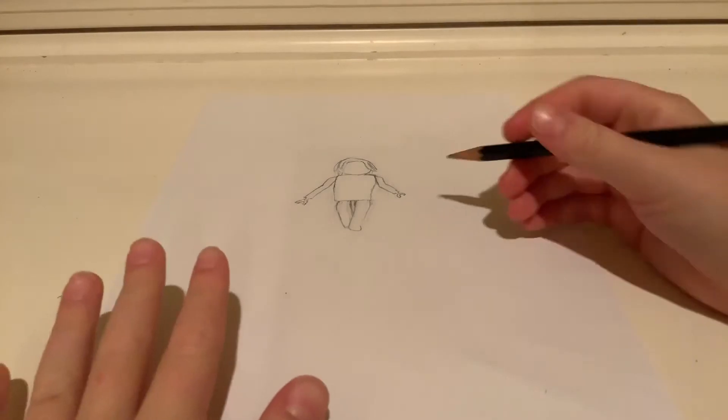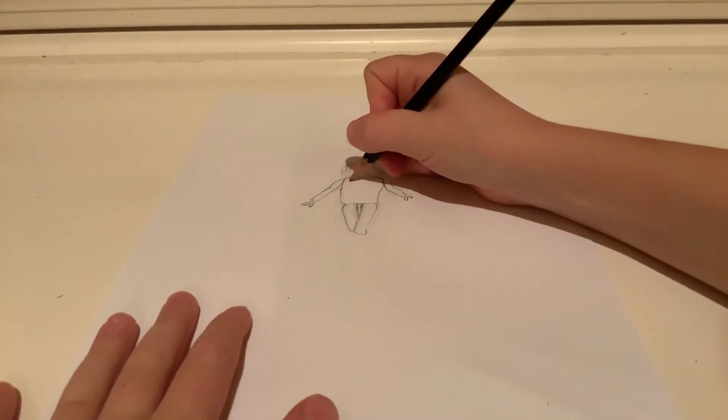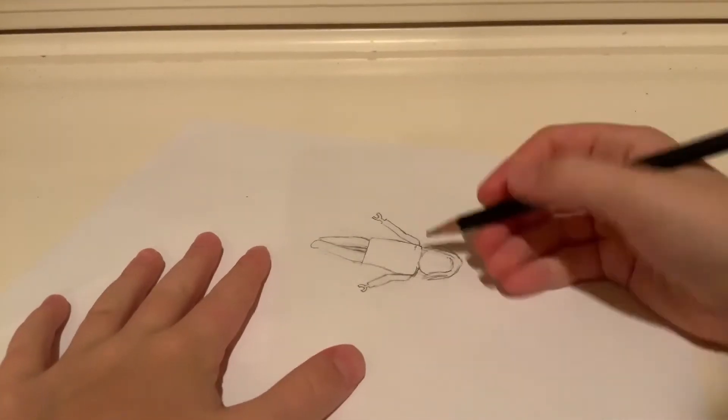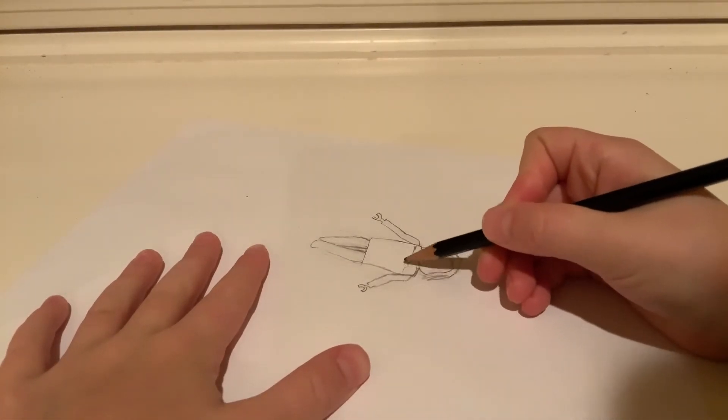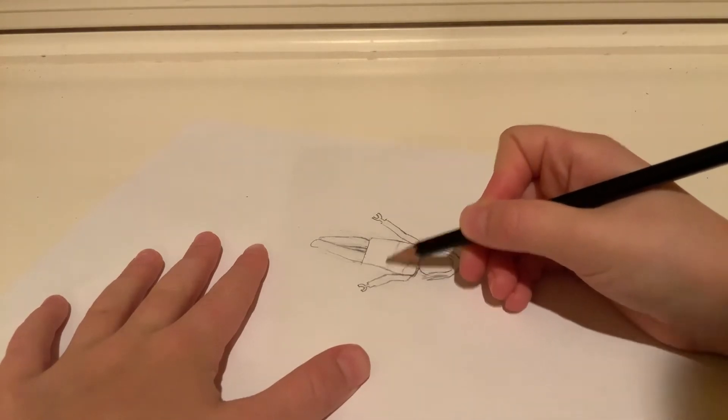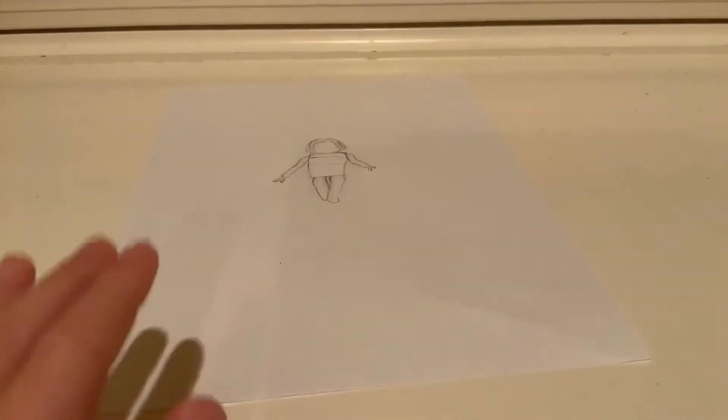As you can see, I sort of straightened up the body as well. We're going to get to the face later with all the details and stuff. But right now, we're going to do the clothing. This girl that I'm drawing, she's wearing like a tank top sort of thing. So, I would advise flipping your paper.